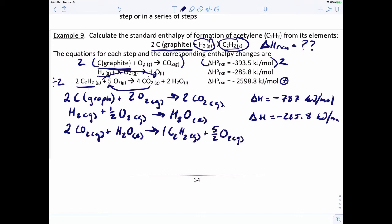And so that enthalpy would be positive 2598.8 divided by two, which gives us a positive 1299.4 kilojoules per mole. I'm going to put a plus sign in front of that just so we keep that straight.